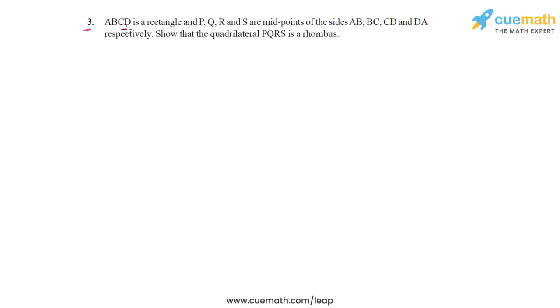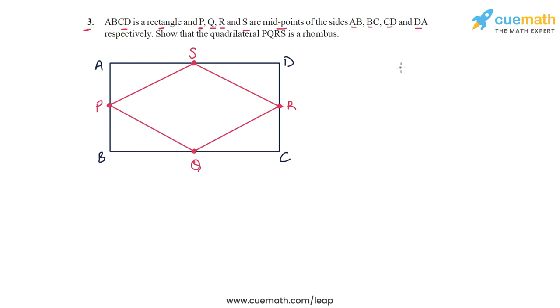Question 3 says that ABCD is a rectangle and PQRS are the midpoints of the sides of the rectangle AB, BC, CD and DA. Here's a figure. ABCD is a rectangle, and you can see that PQRS are the midpoints of the sides of this rectangle. They are joined and we have to show that the quadrilateral formed PQRS is a rhombus.